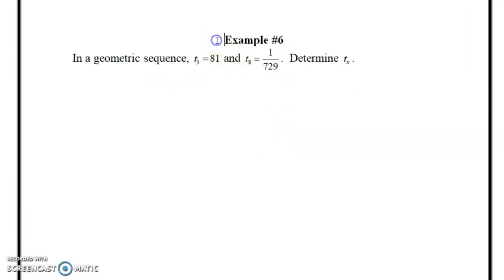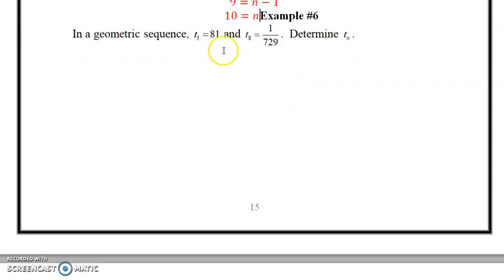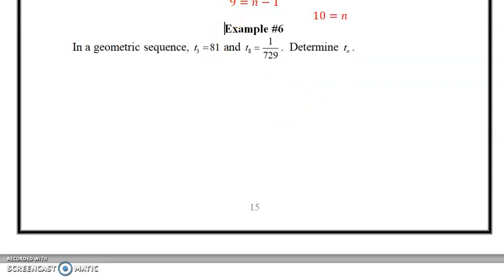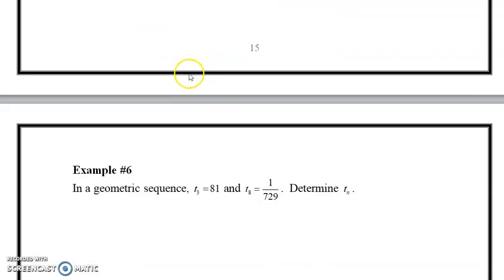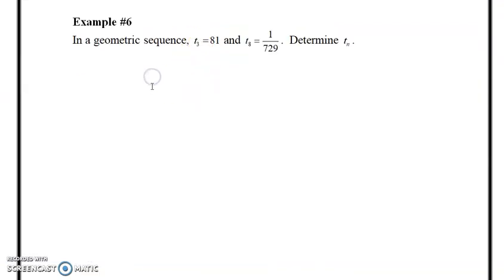So let's go to example 6. Alright. Example 6. Let's take a look. In example 6, we have the third term equal to 81. We have the 8th term equal to 1 over 729. So we clearly see that to get from the third term to the 8th term, we're going to be multiplying by a fraction. The ratio is going to be a fraction now.